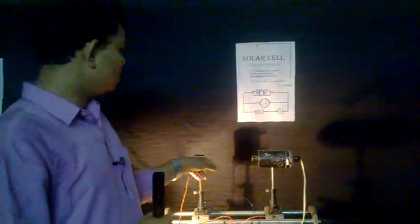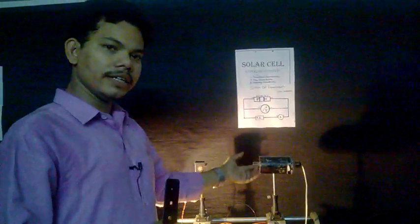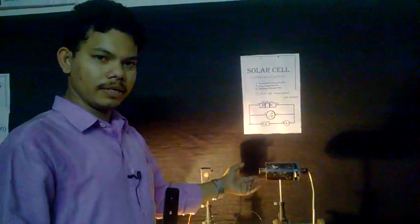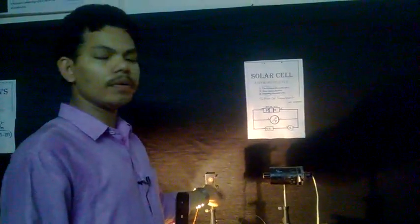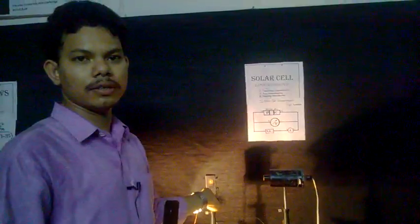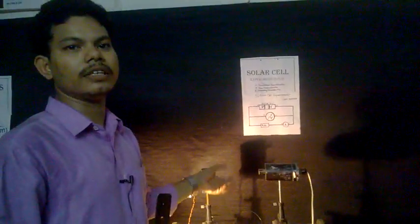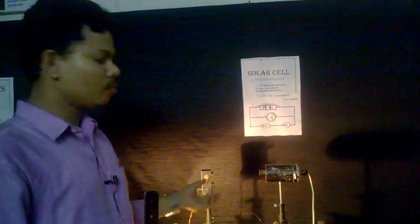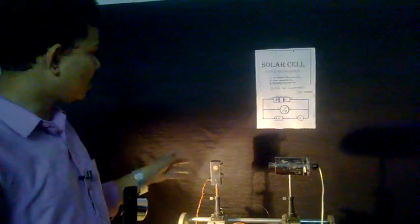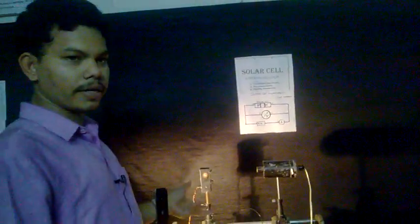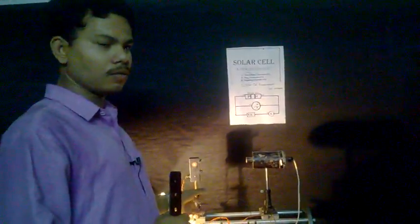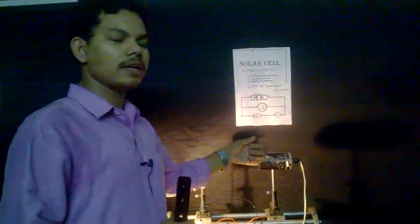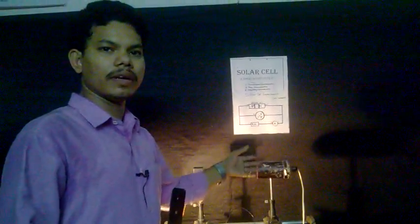So if we change the intensity of light, then the current-voltage relation also changes. Our aim is to find out the current-voltage relation while changing the illumination of light.